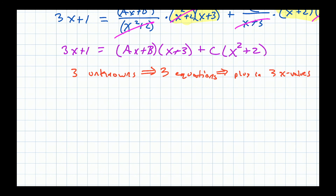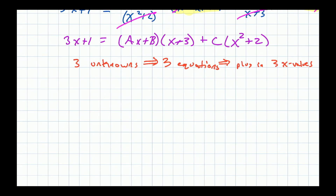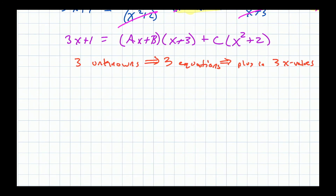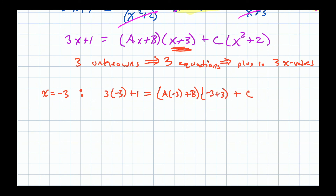Pick x = −3 to zero out the (Ax+B) term. Plugging in: 3(−3)+1 = C((−3)²+2), so −9+1 = C(9+2), giving −8 = 11C. This gives C = −8/11. For the remaining two constants A and B, we need two more x values.